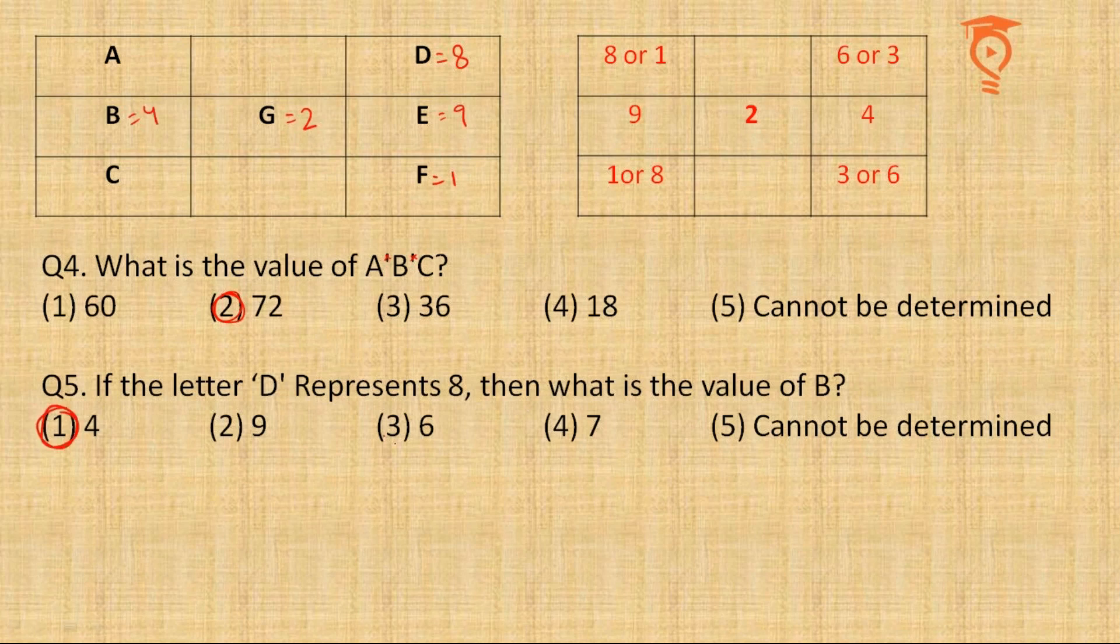If D represents 8, where is D? If D is 8, F must be 1 and E must be 9. This is 2 anyway, this is 4 anyway, so B is clearly 4.